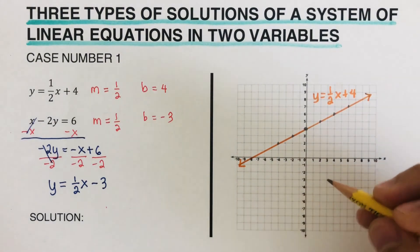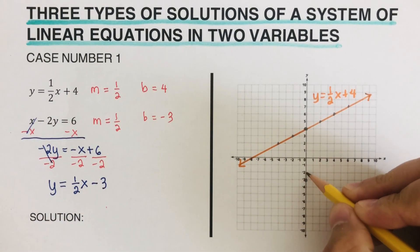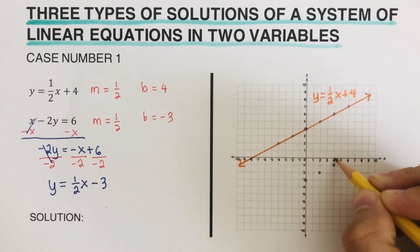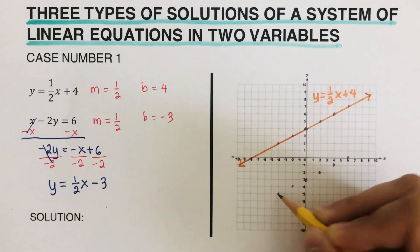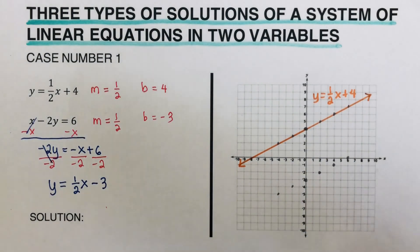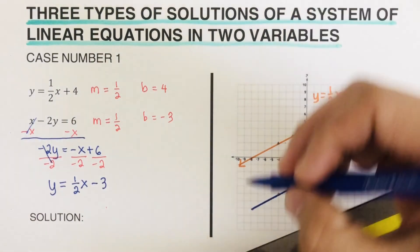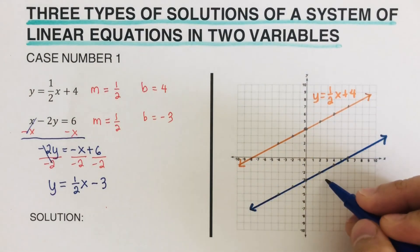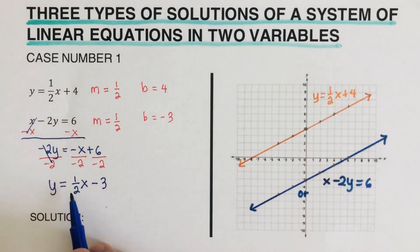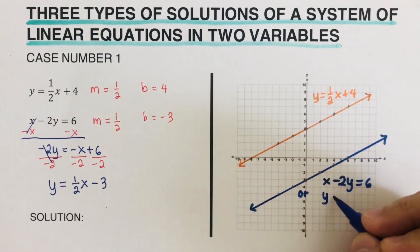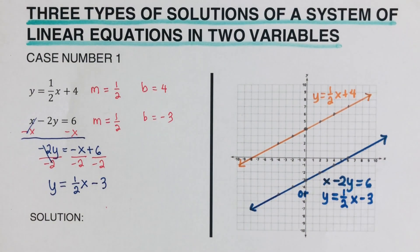So the slope m for this second line is one half and the y-intercept b is negative three. We start graphing at the y-intercept negative three, then since the slope is one over two, we go up one right two repeatedly. We can also go down one left two. Then we connect these dots to create the line, which we label as x minus two y equals six.